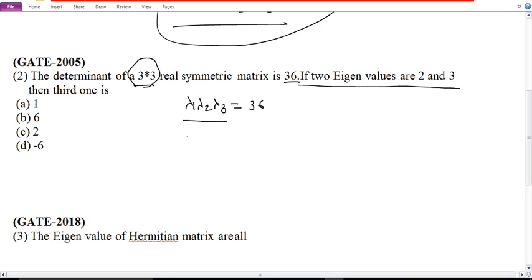If two eigenvalues are 2 and 3, then the third one is... 2 times 3, so 2 into 3 into lambda 3 equals to 36. Therefore lambda 3 equals to 36 upon 6. Lambda 3 equals to 6. That's why the third one is 6.